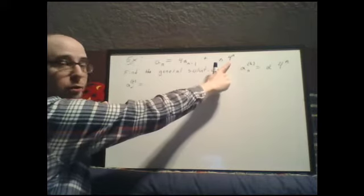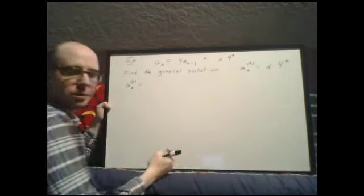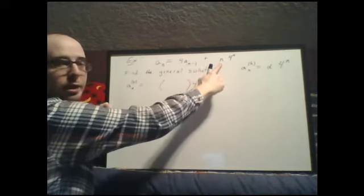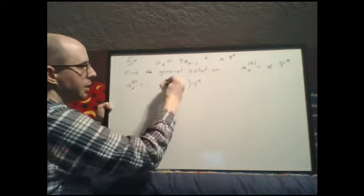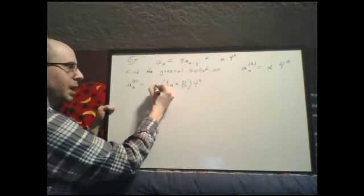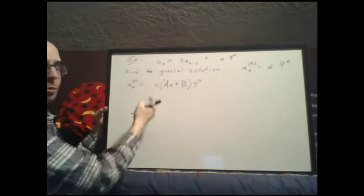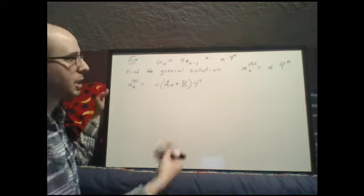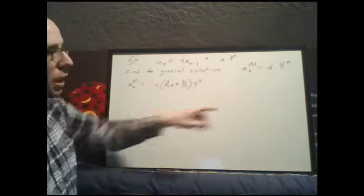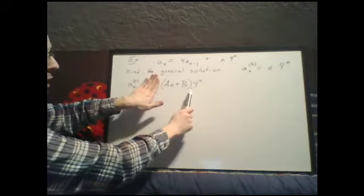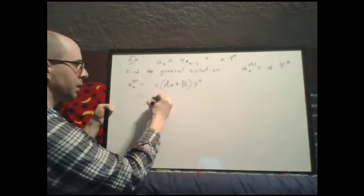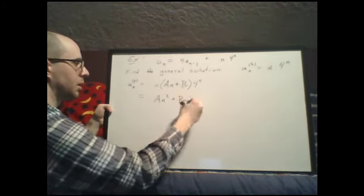For the particular solution a_p(n): the base of the non-homogeneity is 4, which matches the base of the homogeneous solution. We start by matching the exponential part and the polynomial degree — degree 1, so a·n plus b. Since 4 is a root with multiplicity 1, we multiply by n, giving a_p(n) equals (a·n² plus b·n) times 4 to the n.